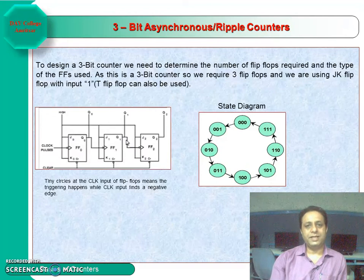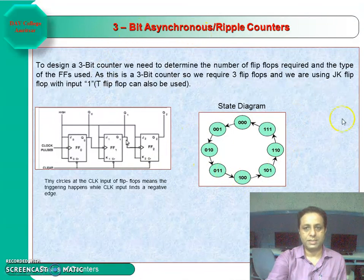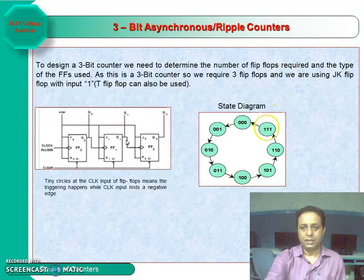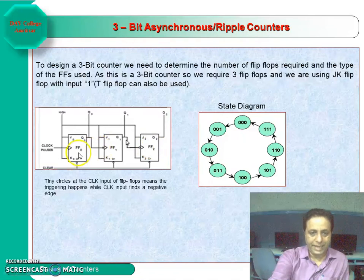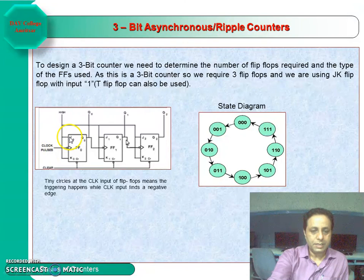The first counter example is a 3-bit asynchronous ripple up counter. With 3 bits, the states are 0 through 7. This is the state diagram for a 3-bit asynchronous up counter. The counter counts in the up direction: 0, 1, 2, 3, 4, 5, 6, 7, and then in a down counter it would go 7, 6, 5, 4, 3, 2, 1. The circuit diagram shows 3 flip-flops named FF0, FF1, and FF2. FF0 is the least significant flip-flop and FF2 is the most significant. The inputs of FF0 are tied together with logic high value 1.